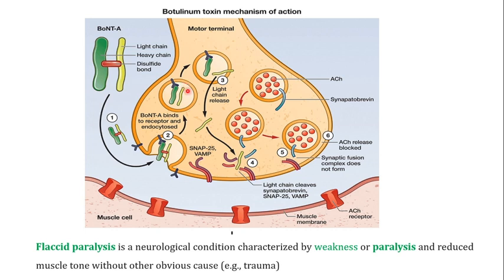Once the botulinum toxin enters the neuron, the disulfide bond is broken and the light and heavy chains dissociate. The heavy chain remains associated with the receptor, but the light chain is released. The light chain has enzymatic activity and breaks down the SNARE proteins — specifically SNAP25, syntaxin, and VAMP (vesicle-associated membrane proteins).